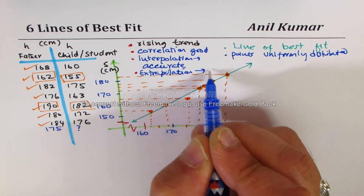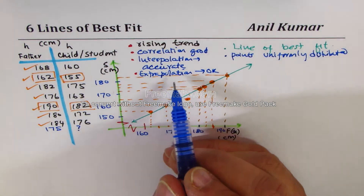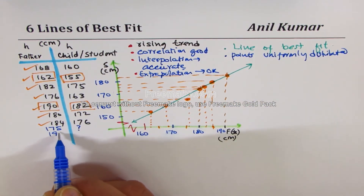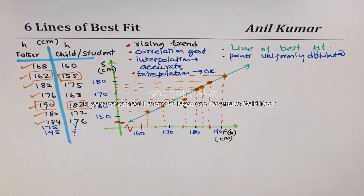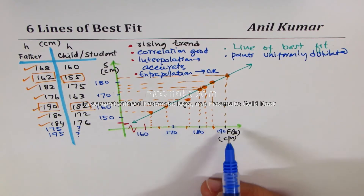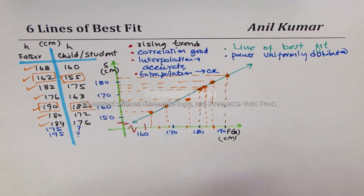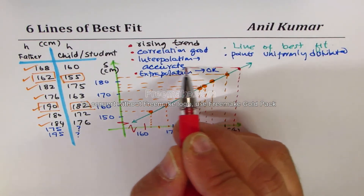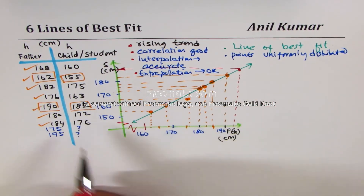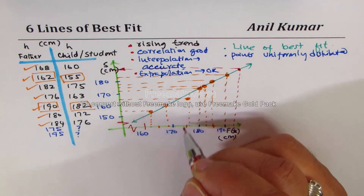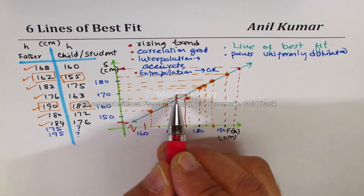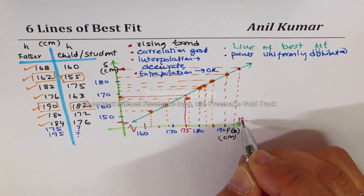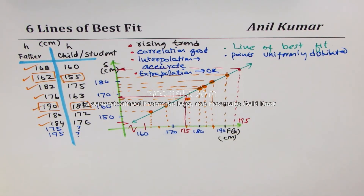Even extrapolation will not be bad — I should say okay. Normally extrapolations are not that accurate. For example, if the height of the father is 195, what should be the height of the student? 195 is not in our scale, but we could figure it out — we bring it here and extrapolate. For interpolation, 175 is midway, so we go up and say the height should be around here. So 175 and 195, we could extrapolate from our scatter plot.